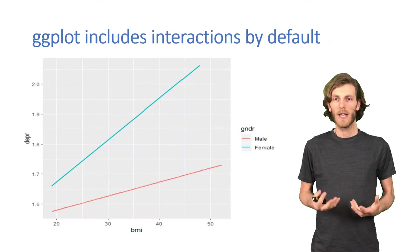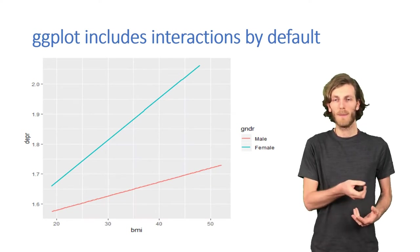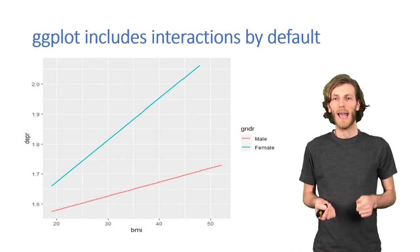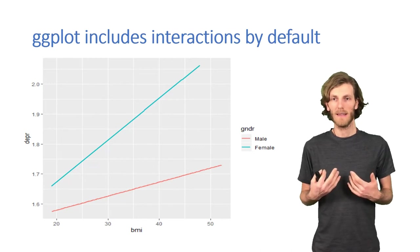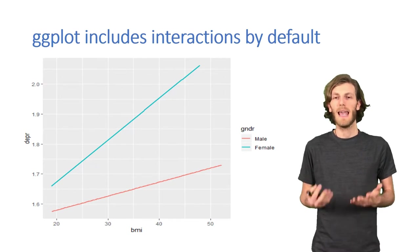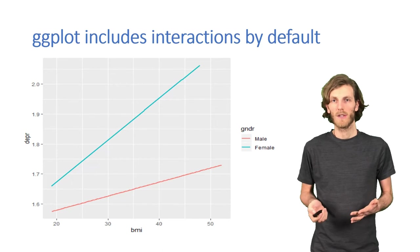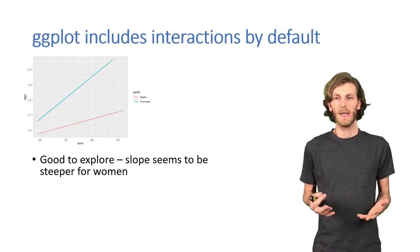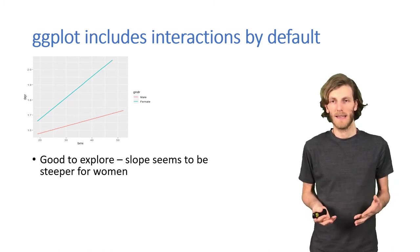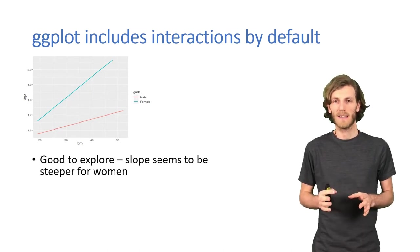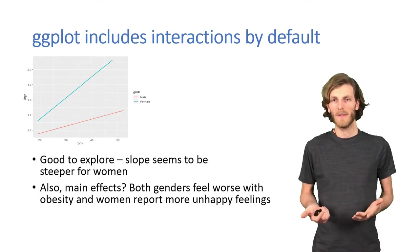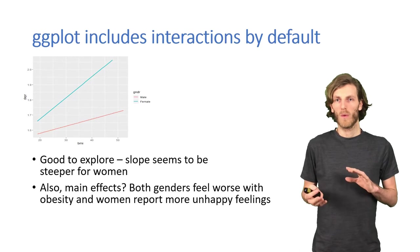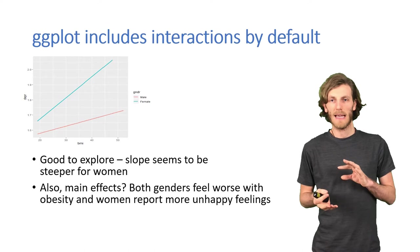And if we now run a normal plot in ggplot, where we map body mass index on the x-axis, the frequency of negative feelings or depression on the y-axis, and specify that we want gender to be mapped to color and therefore that we want a separate line per gender, actually ggplot automatically includes the interaction. So it's a very easy way to get into exploration. And here there seems to be some evidence for an interaction because the two lines aren't parallel. But of course they will never be exactly parallel. So it's important to not rely on this visual testing. There also seems to be a main effect. The line for women seems to be higher at all points.